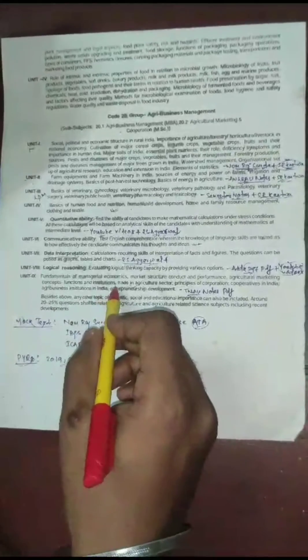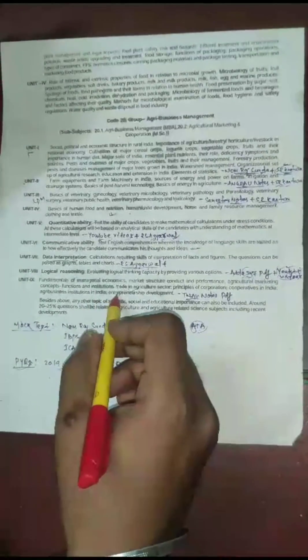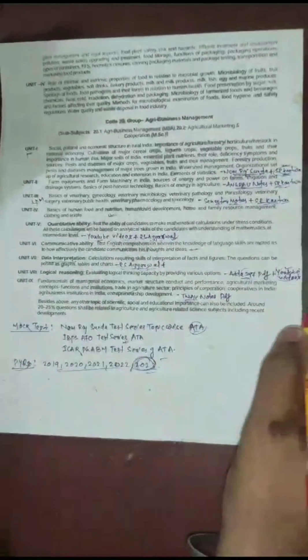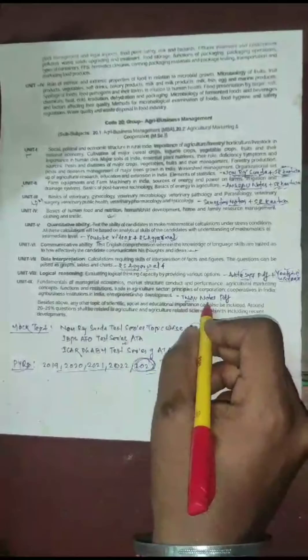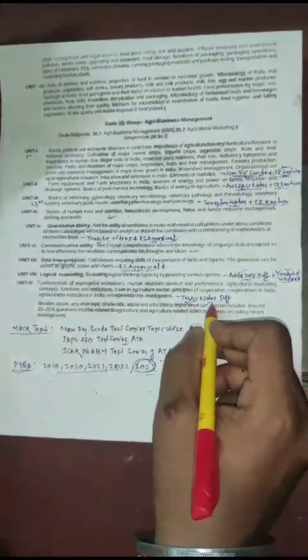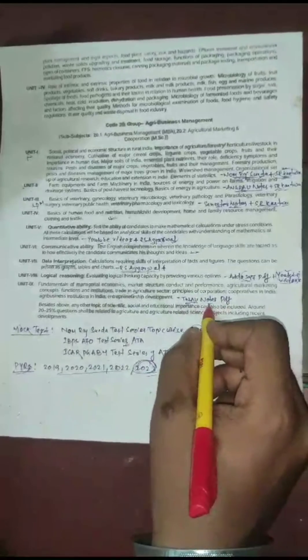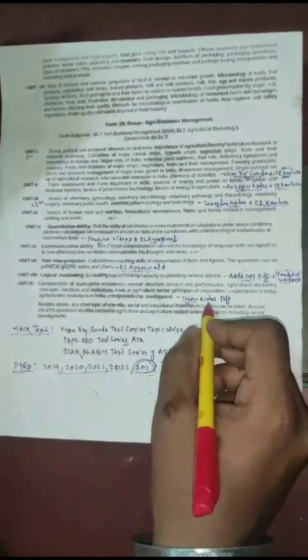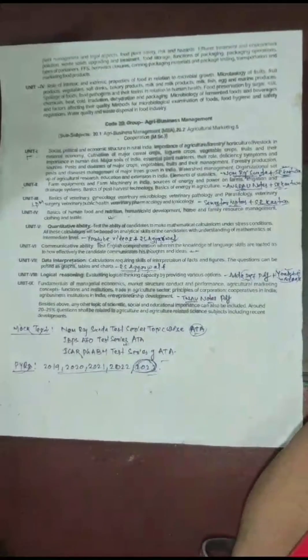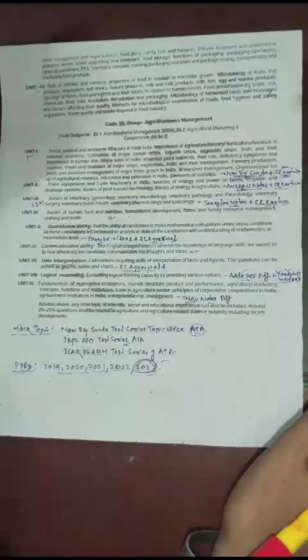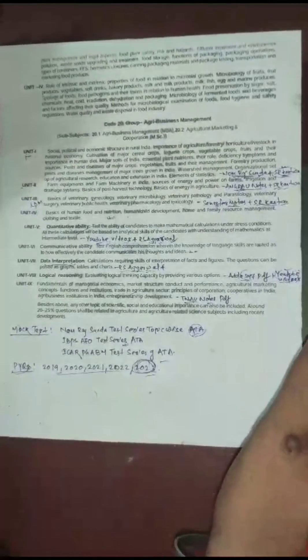Then comes the Economics part or Management part. You can cover it from Tamil Nadu Notes, which you can freely download from their website. You can also go for 6th Semester PBG Elective Notes to cover this section.